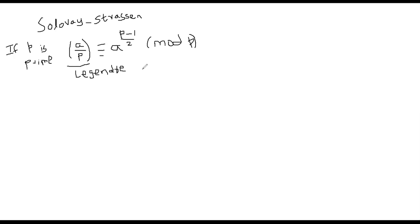If P is prime, this particular property holds. But the problem is that the converse is not true. If the Legendre symbol satisfies the property — that is, A Legendre symbol P is congruent to A^((P−1)/2) mod P — it doesn't necessarily imply P is prime.